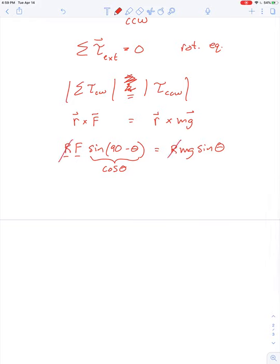If we cancel the R on both sides, then in step number four, we can say F cosine theta is equal to mg sine theta, which gives us step number five, F minimum must be equal to mg tangent theta.